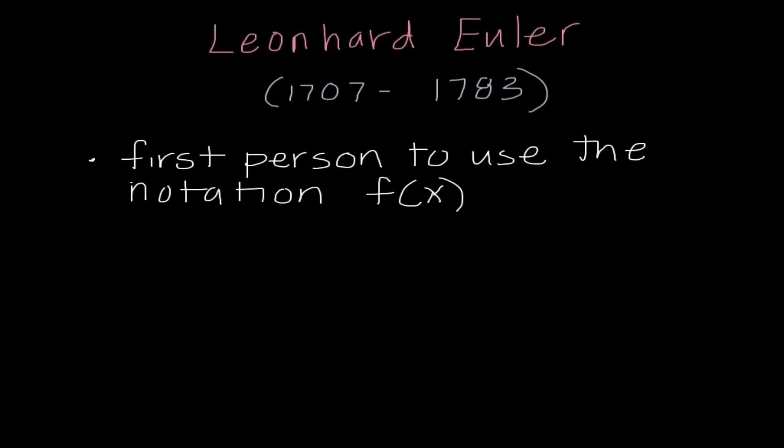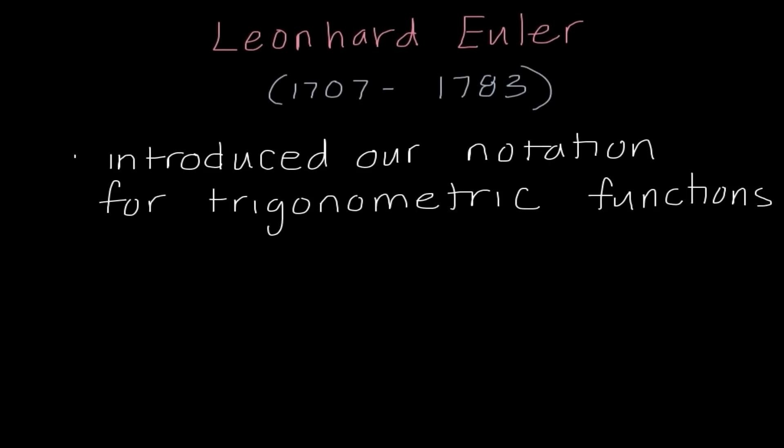In fact, Euler was the first person to use the notation f of x to represent a function. He also introduced our notation for trigonometric functions, which we will get into towards the end of this semester. So instead of writing out sine, cosine, tangent, he was the one that abbreviated the way we write them and made that commonplace.